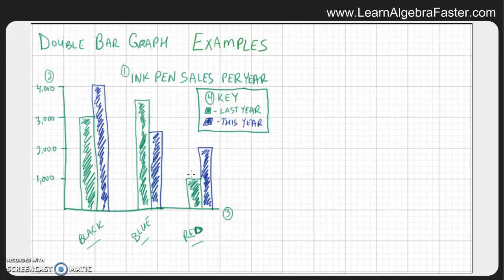And from this, we can see the red doubled. So it went up a lot. The blue sales went down and the black sales went up. So last year it was 3,000. Now it's 4,000. Blue sales went from 3,500 to 2,500. So they went down by a thousand and red went up a thousand from 1,000 to 2,000. So you can see how the sales changed between this year and last year. That's pretty cool. Let's do one more example and let's show how we can change a regular bar graph into a double bar graph.